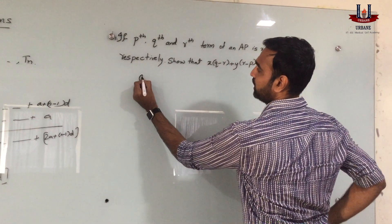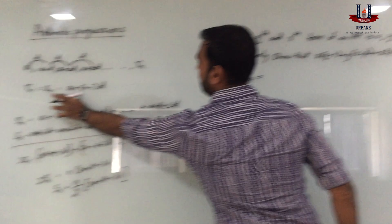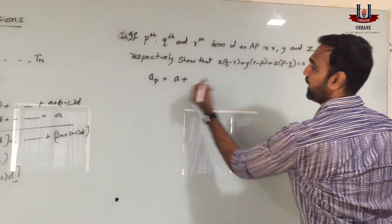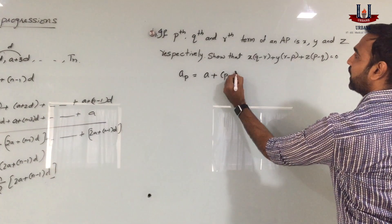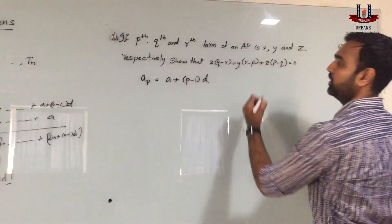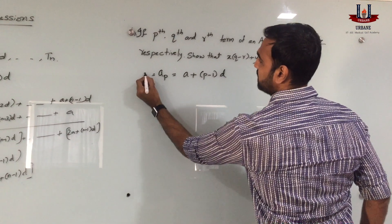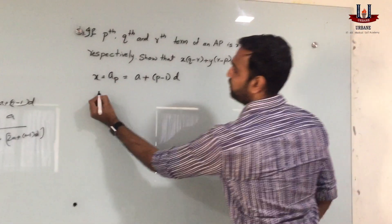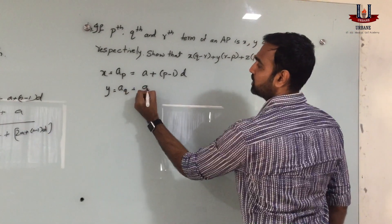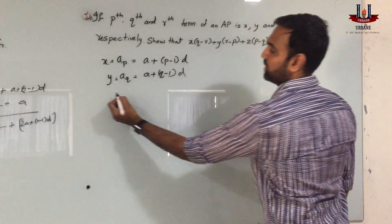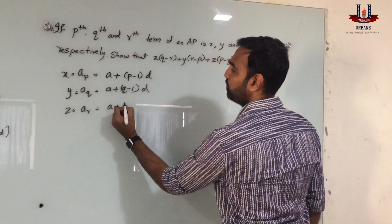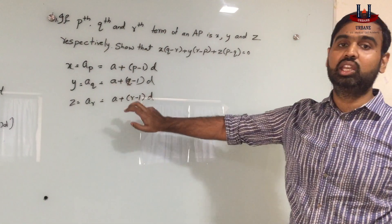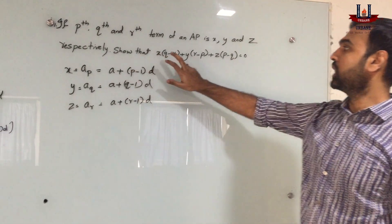At the pth position we have value x, at the qth position we have value y, and at the rth position we have value z. The first one: at the pth position, the value is a plus (p minus 1) into d, and that equals x. We don't know the first term of this arithmetic sequence, so let's consider it as a, and the common difference as d. The second statement says y equals a plus (q minus 1) into d, and z equals a plus (r minus 1) into d. These give us three equations.